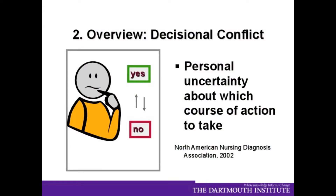Let's move to the brief overview of the construct of decisional conflict. This was a construct built on the work of Janice, who was a psychologist, but it was actually defined in the North American Nursing Diagnosis Group way back in the 1980s, recently published in 2002. It's personal uncertainty — not clinical uncertainty — about which course of action to take.